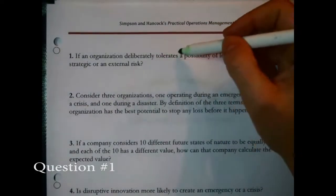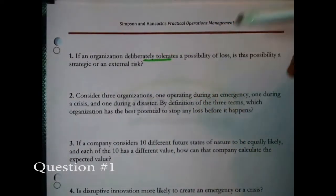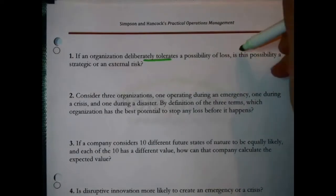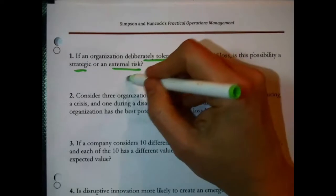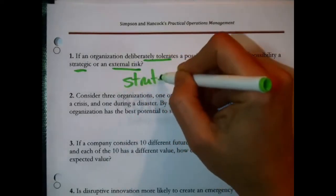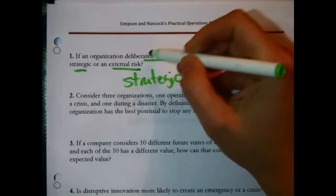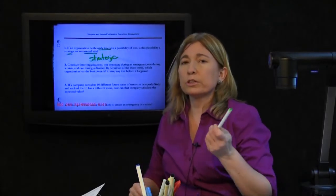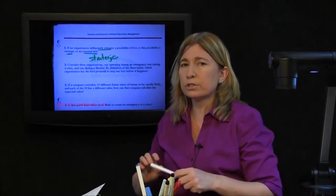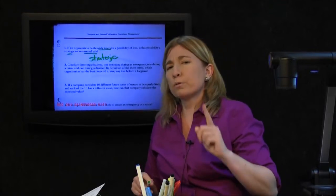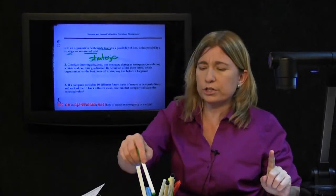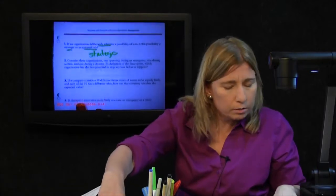If an organization deliberately tolerates the possibility of a loss, is this possibility a strategic or an external risk? The answer is strategic. The key in answering that was deliberately tolerates. An external risk would be something that just happens in the environment, but firms choose strategic risks.